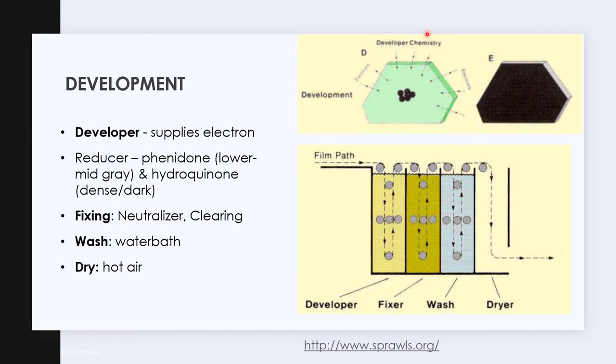The reducer converts the exposed grains into visible metallic silver. And we have two chemicals here. First is the phenidone that produces the lower to mid-gray scale while hydroquinone produces the dark scale areas.